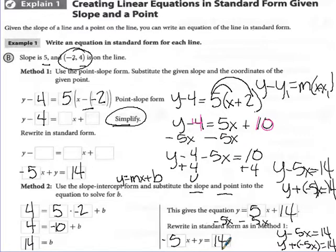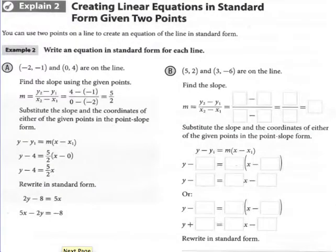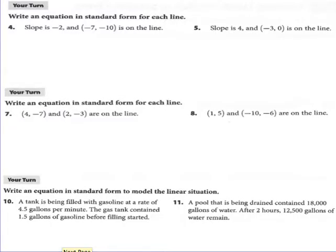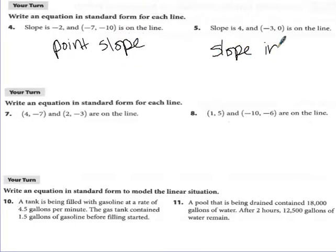You're going to be required to try both methods. Once we get further into the module, you'll be able to choose which method you like better. For your Your Turn problems, numbers 4 and 5 — for number 4, I want you to use point-slope form, and for number 5, use slope-intercept form.